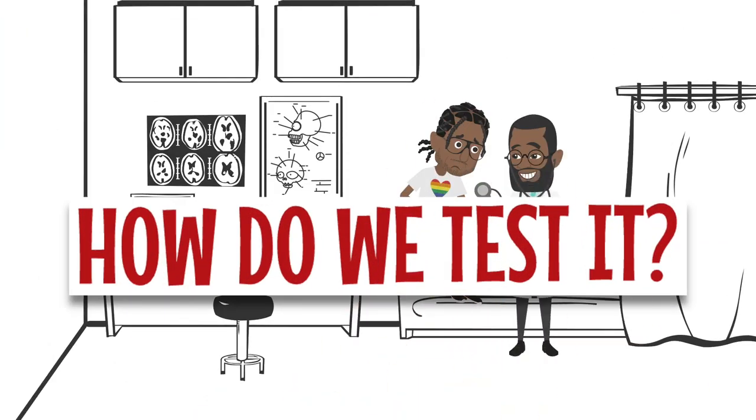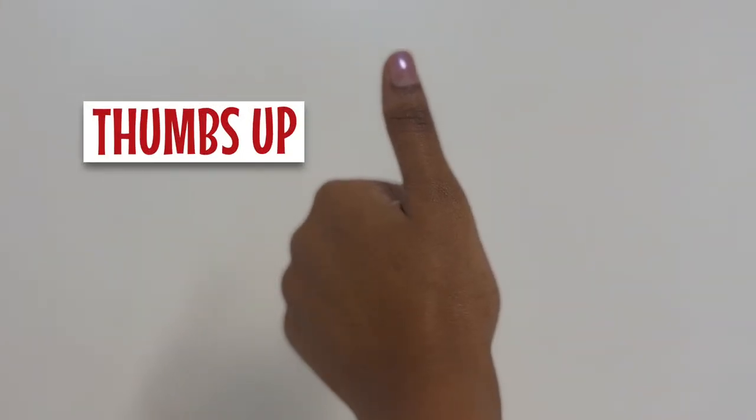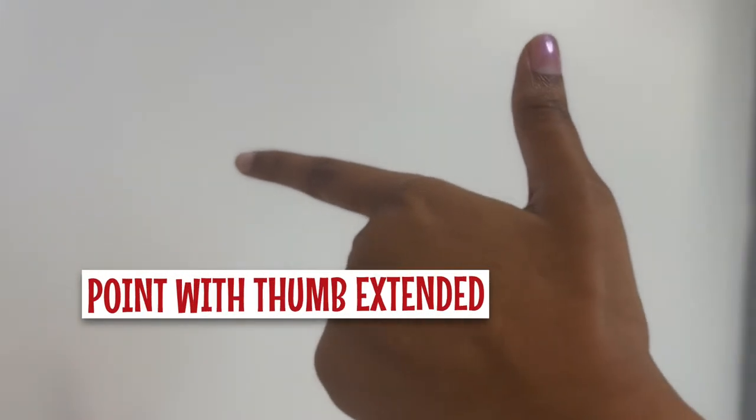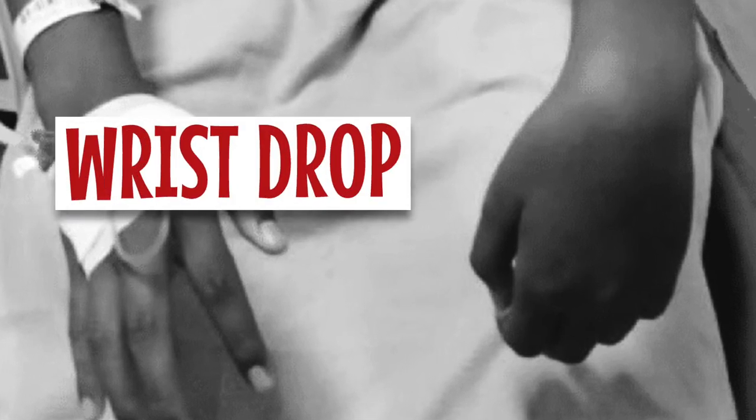How do we test it? Ask the patient to make a thumbs up or to point with their thumb extended. Radial nerve palsies cause a wrist drop.